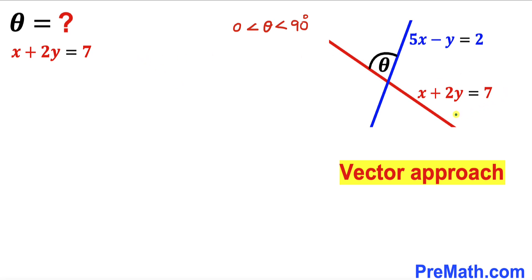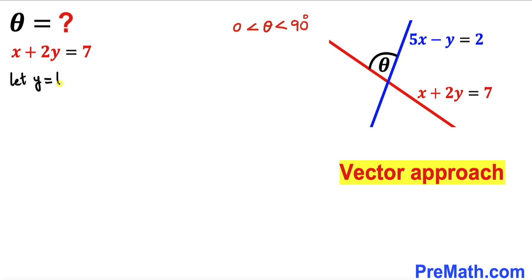Let's focus on this red straight line whose equation is x plus 2y equals to 7. Now let's assume that y has some constant value t — in other words, let y equal to some constant value t.